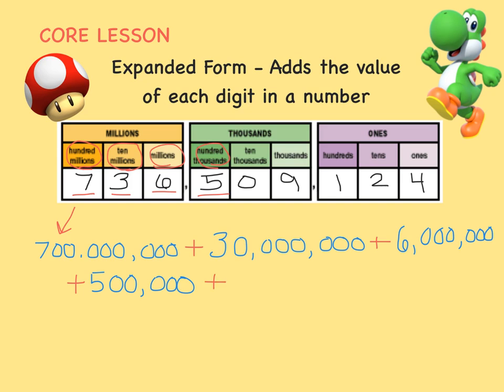The zero is in the — well, it doesn't even matter which place it's in because a zero is always worth nothing. It's important to have the zero in this number because it holds the 10,000's place, but we don't need to worry about writing this value down in expanded form.